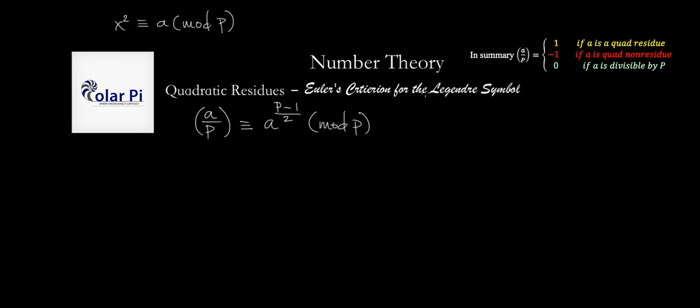In a video that followed, titled "Quadratic residues: What is the Legendre symbol?", we said in summary that the Legendre symbol a over P equals 1 if a is a quadratic residue mod P, negative 1 if a is a quadratic non-residue mod P, and 0 if P divides a.